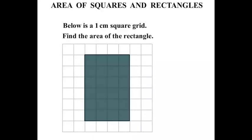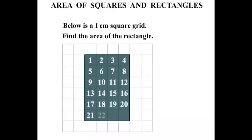Now below is a one centimeter square grid. We are asked to find the area of the rectangle. So this rectangle here, a couple of ways of finding the area. Let's count up how many square centimeters it is, one at a time: 1, 2, 3, 4, 5, 6, 7, 8, 9, 10, 11, 12, 13, 14, 15, 16, 17, 18, 19, 20, 21, 22, 23, 24.